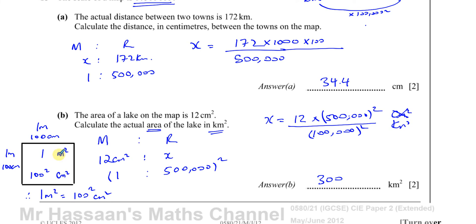So for units of area, you square the conversion you normally use. To change from centimeters to kilometers, you divide by 100,000. So from centimeters squared to kilometers squared, you divide by 100,000 all squared. That's why I divided by 100,000 squared. And there's the answer to these two parts of the question.